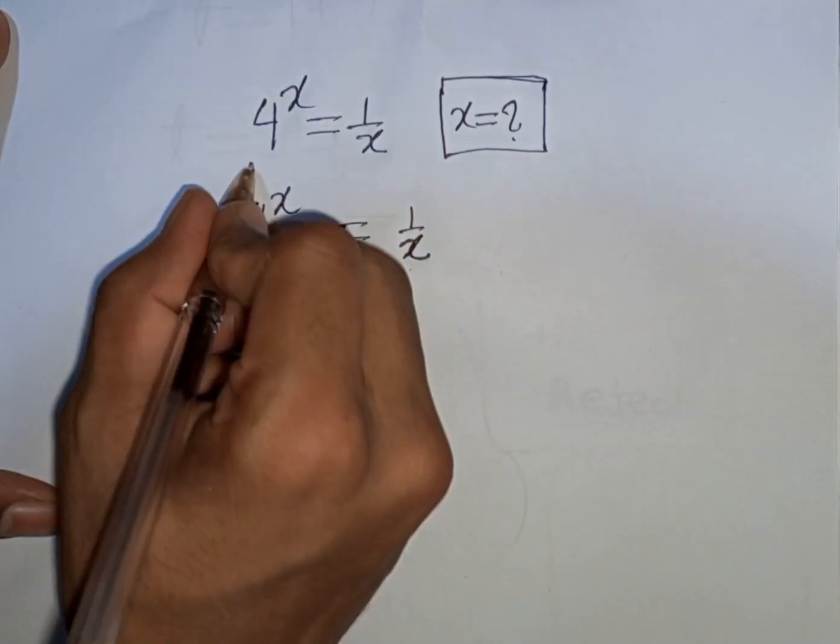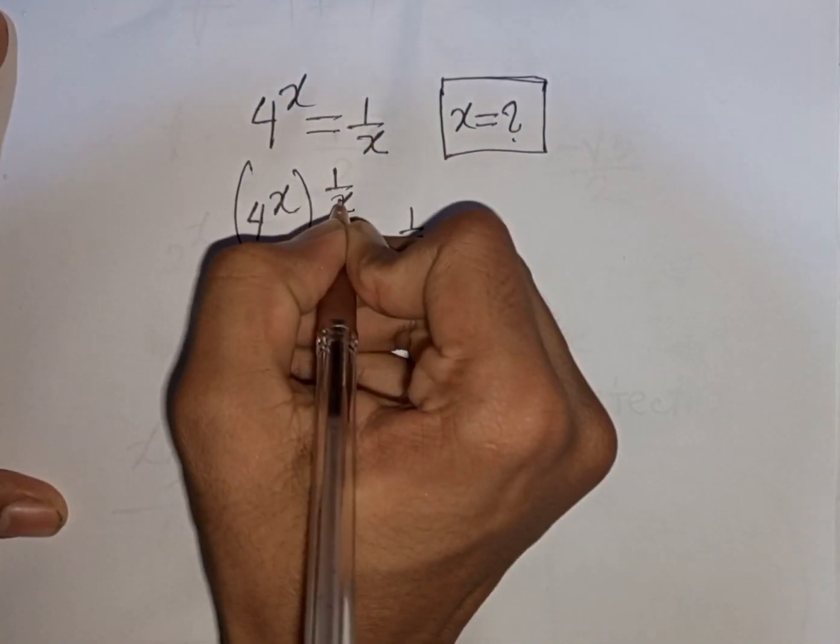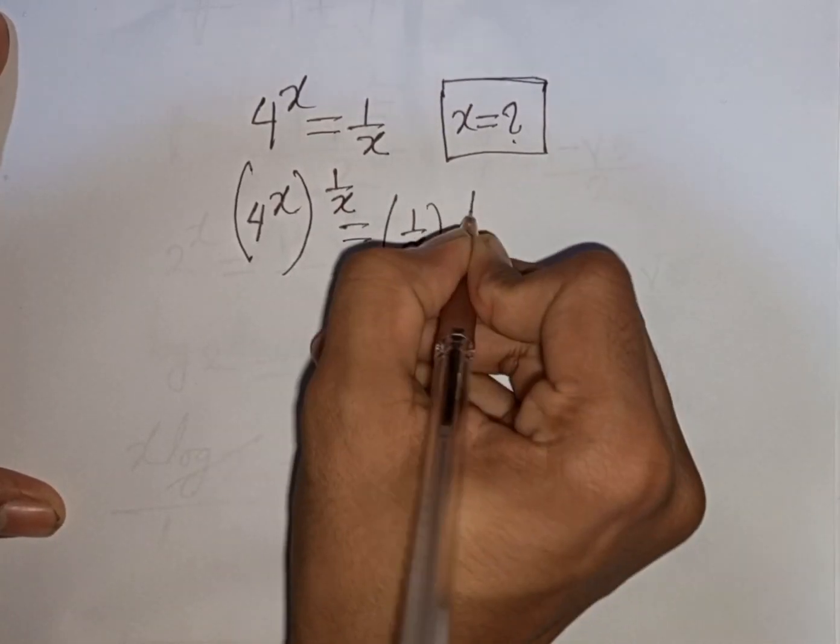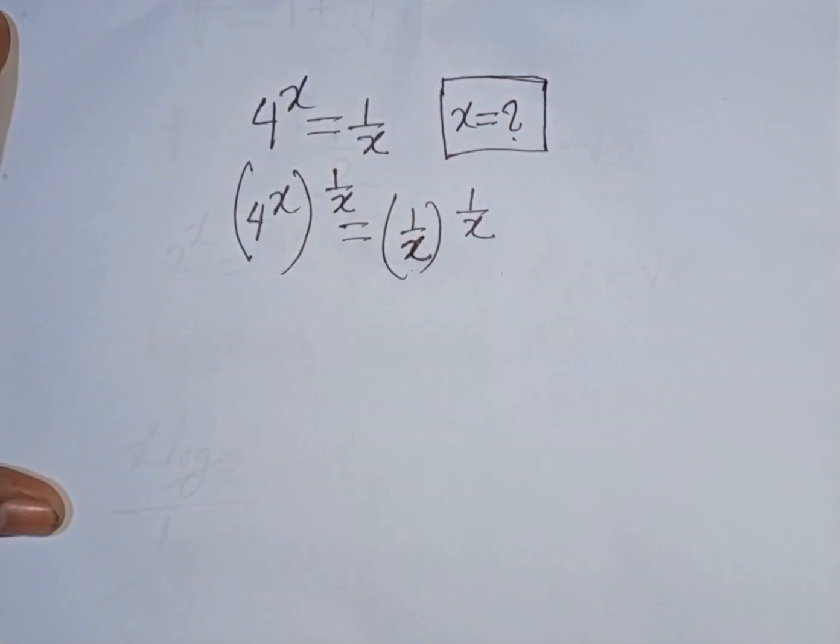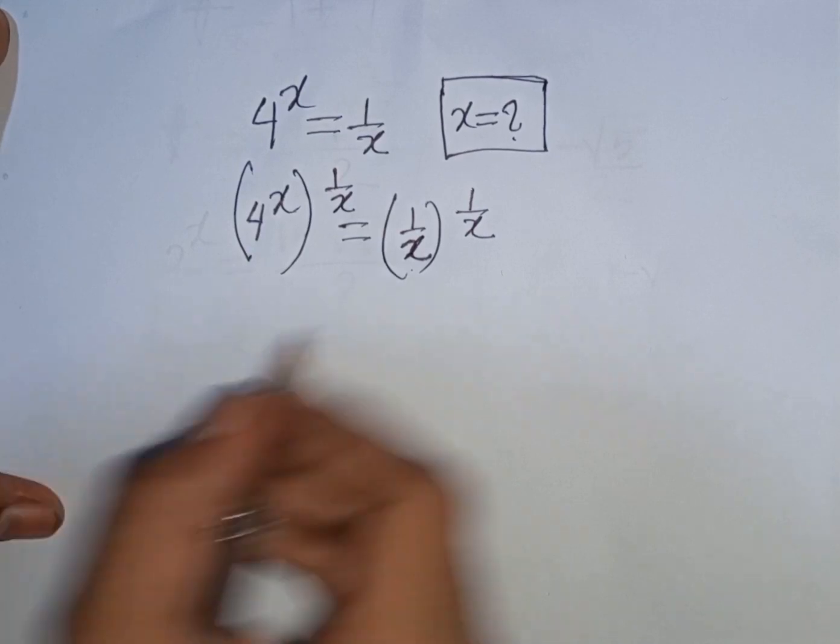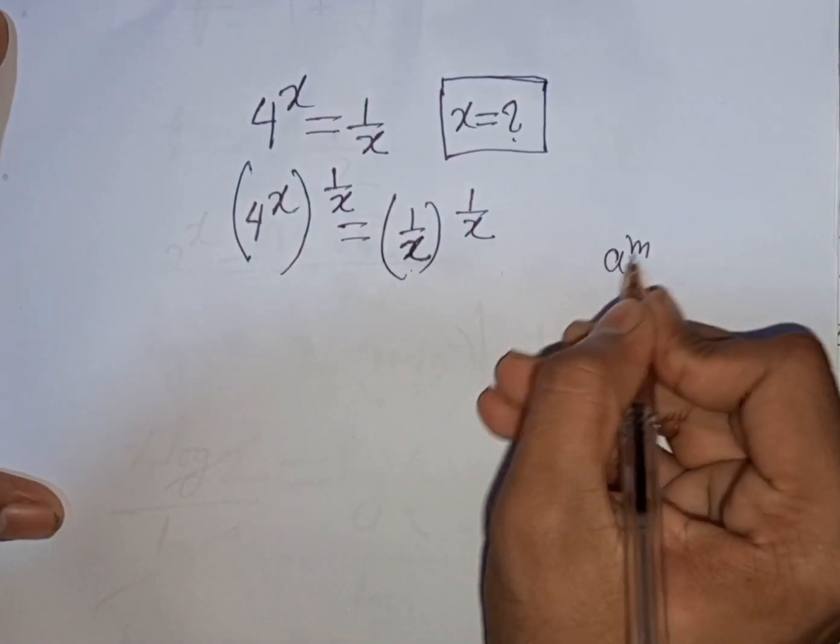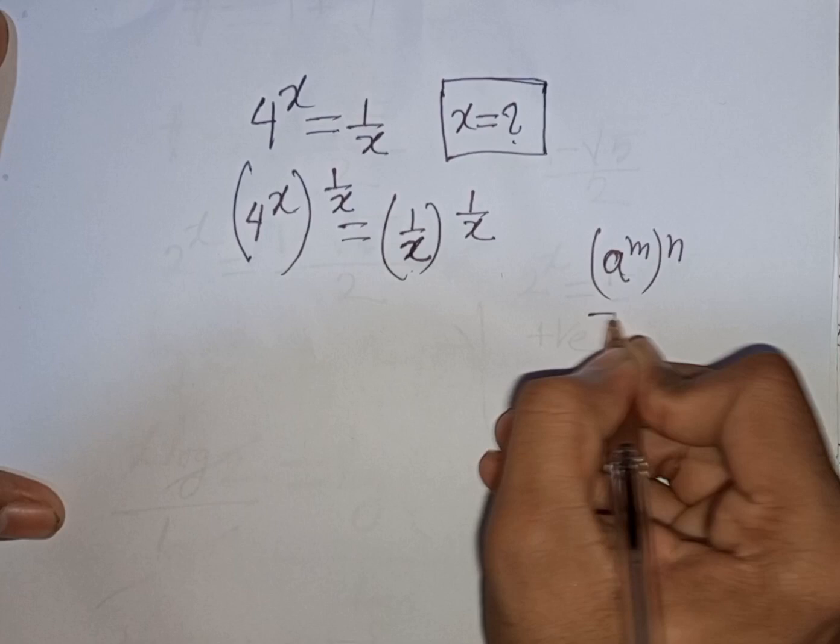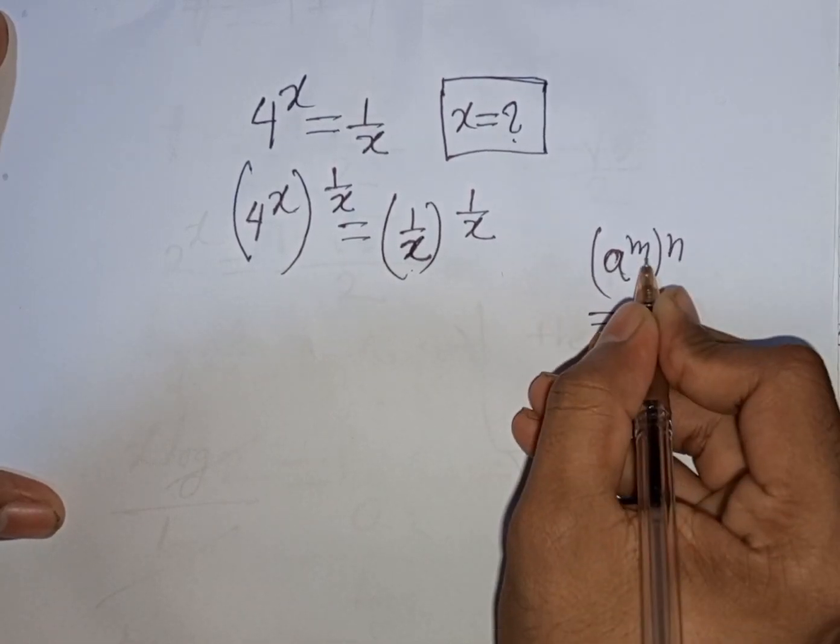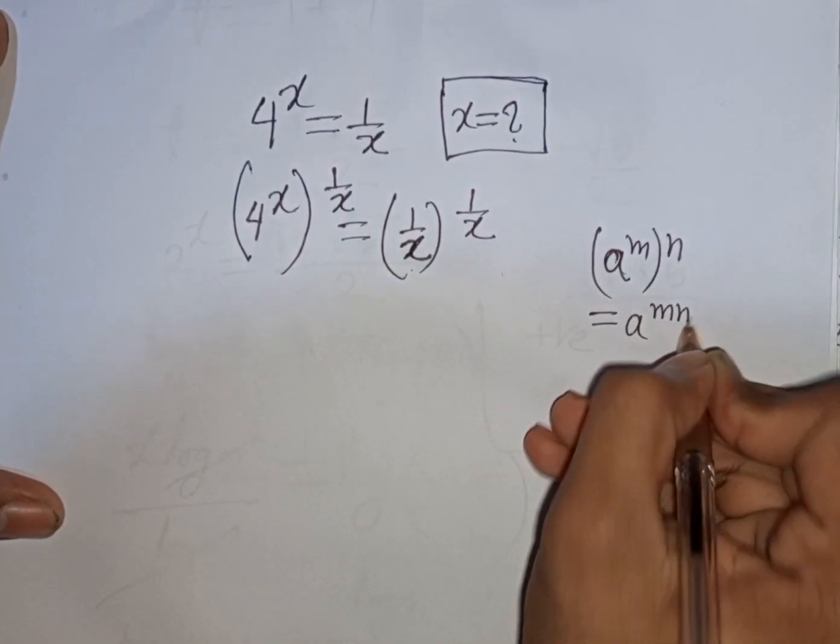So multiply by power of 1/x in both sides. Now here we can apply this exponential rule that (a^m)^n = a^(m×n), that means it will be mn.